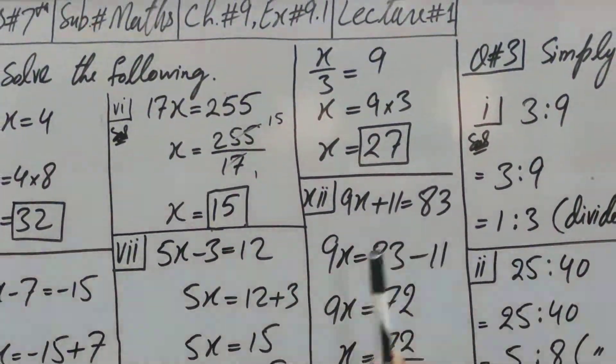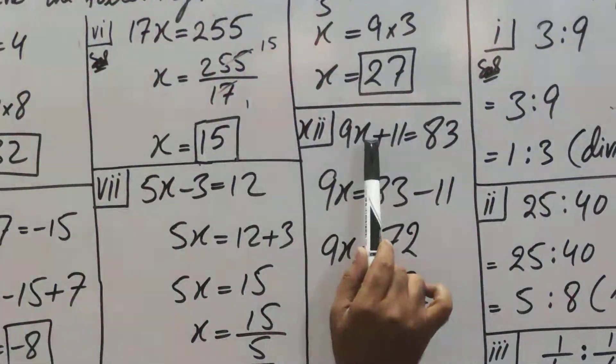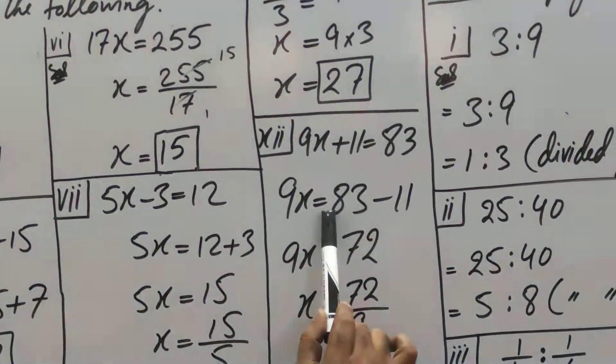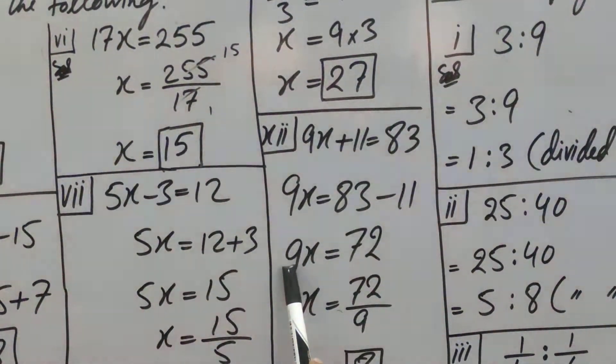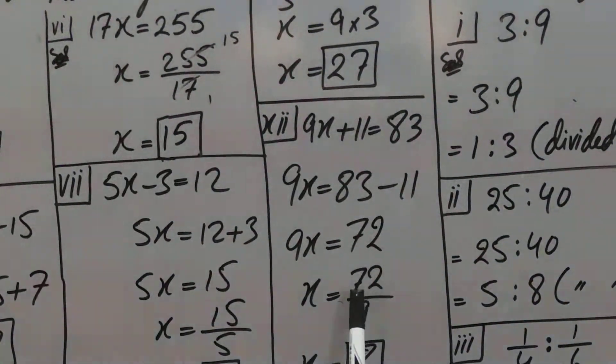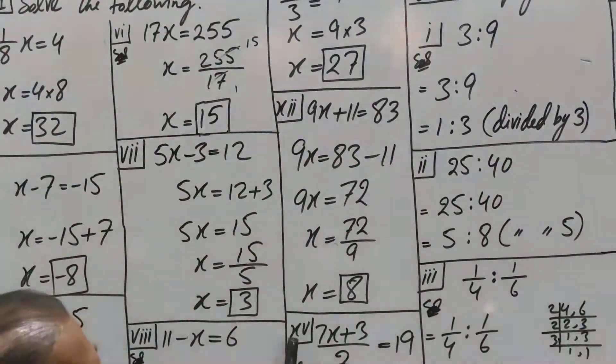Similarly, one more question. 9x + 11 = 83. This +11 will be -11. 83 - 11 = 72. 9 is multiplying, so divide. Both cancel out to give 8.